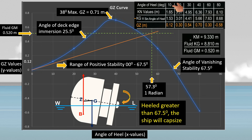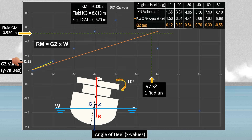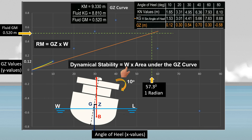At a 10-degree angle of heel, the GZ value is 0.12 meter, so the ship created a righting lever of 0.12 meter — and this is the corresponding point on the graphical representation. To determine the moment of statical stability, or righting moment, multiply the righting lever at 10 degrees (0.12 m) by the ship's displacement. To determine the dynamical stability, multiply the ship's displacement by the area under the GZ curve. We can determine this area using Simpson's rule, but the full calculations will be done at 30 and 40 degrees angle of heel.